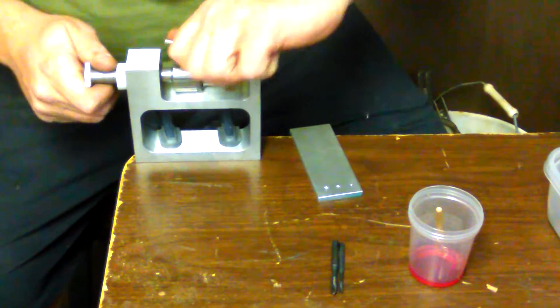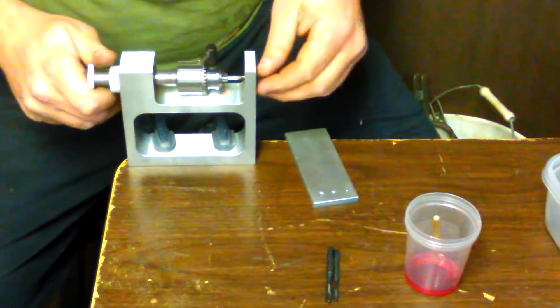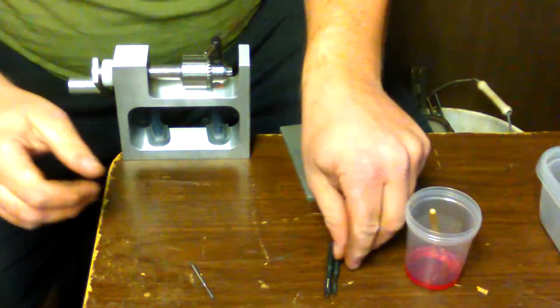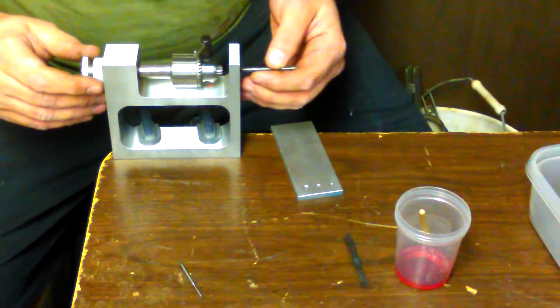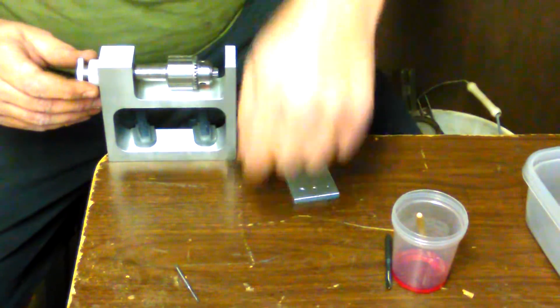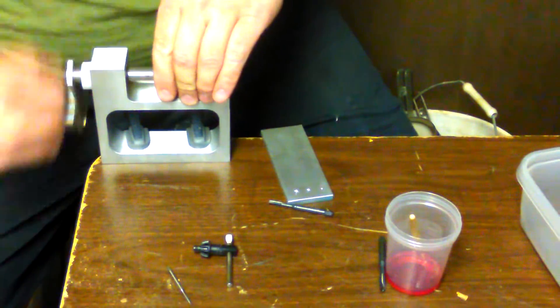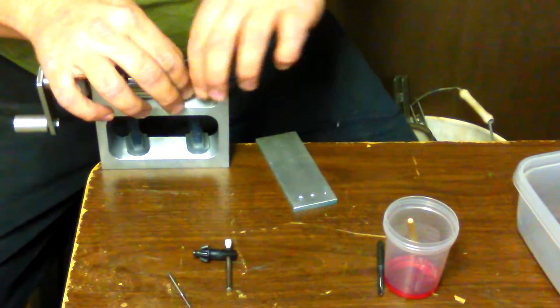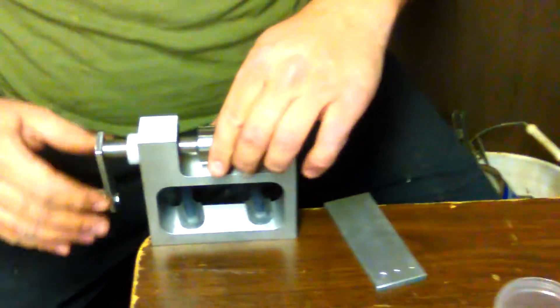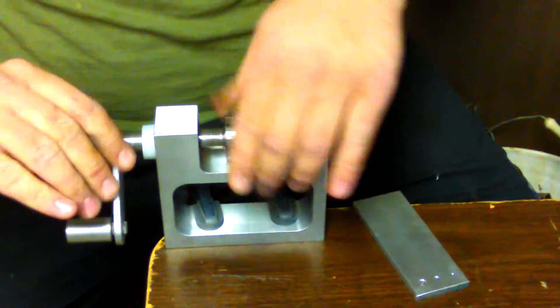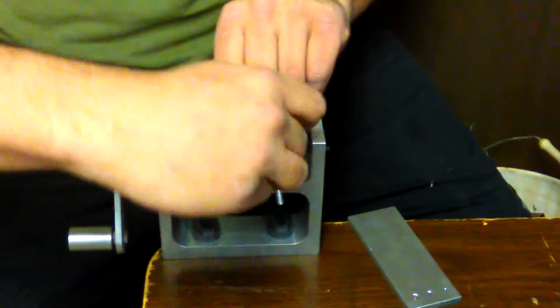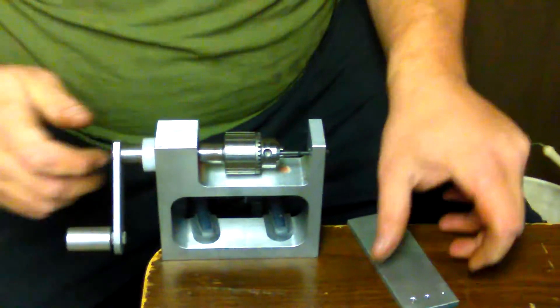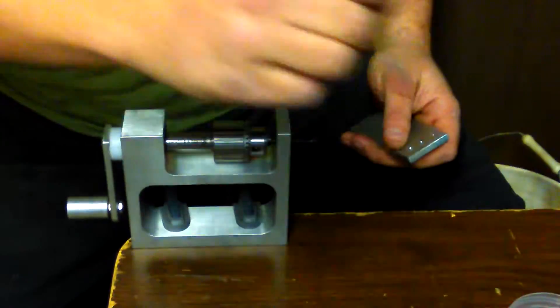Next up would be a 10-32, which is a number 21 drill or 159 thousandths hole. Pop it through there, hand tight, and tighten that up. Lubrication.